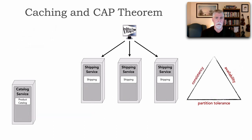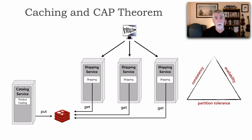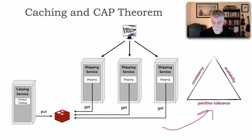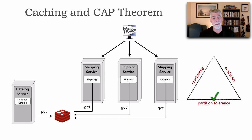Let's go to another caching topology — distributed caching, from lesson 77. I'm going to use a simple Redis cache. The catalog service does puts to all of its catalog information, and all three instances of the shipping service can query that cache. Looking at the CAP theorem triangle, it's a distributed architecture so I have to support partition tolerance — the P part — which leaves me again with consistency or availability.